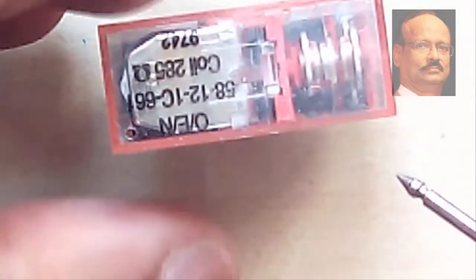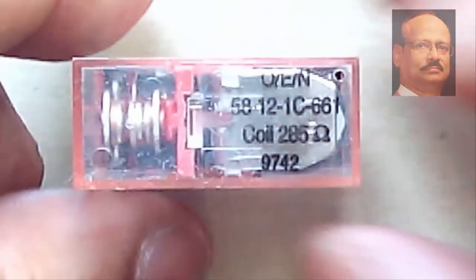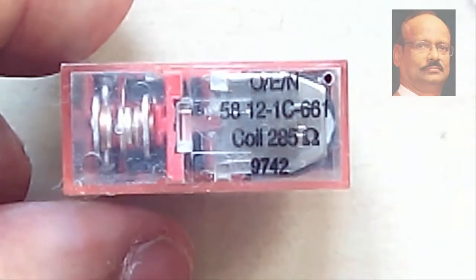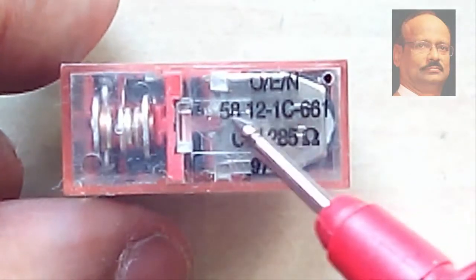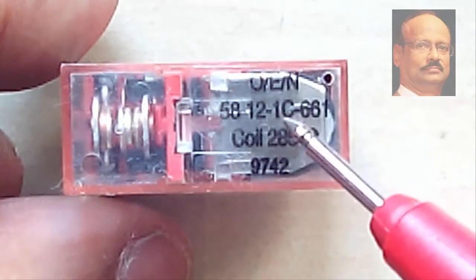This is a relay where you can find, this again is a 12 volt relay. It is an OEN relay made in India. And this is a 12 volt relay, 1C.